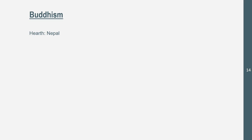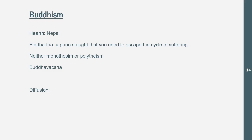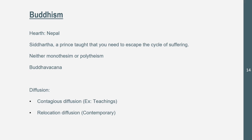Buddhism: the hearth is in Nepal. Siddhartha, a prince, taught that you need to escape the cycle of suffering. Those teachings diffused, especially down the Silk Road, which brought Buddhism into China. Buddhism is neither monotheistic nor polytheistic — they don't believe in one or multiple gods. It spread through contagious diffusion through teachings and through relocation diffusion. Buddhism is diffusing a lot in contemporary times, with significant relocation diffusion happening now.